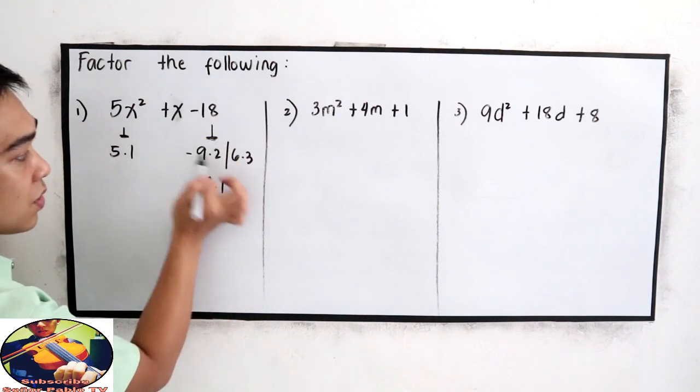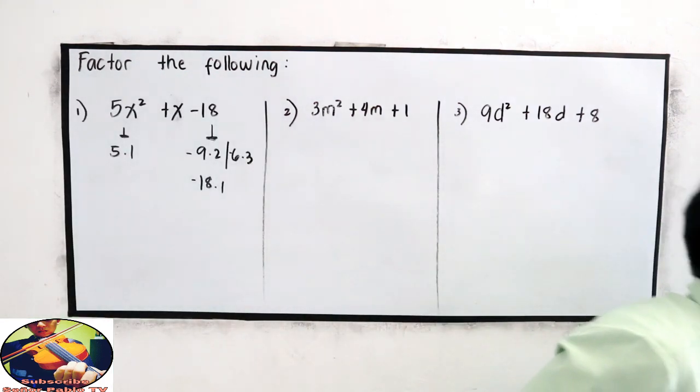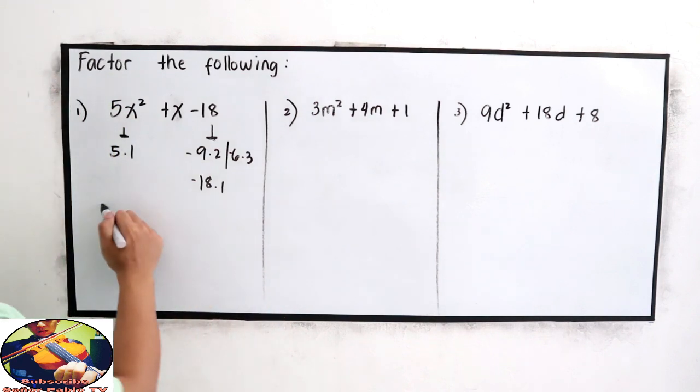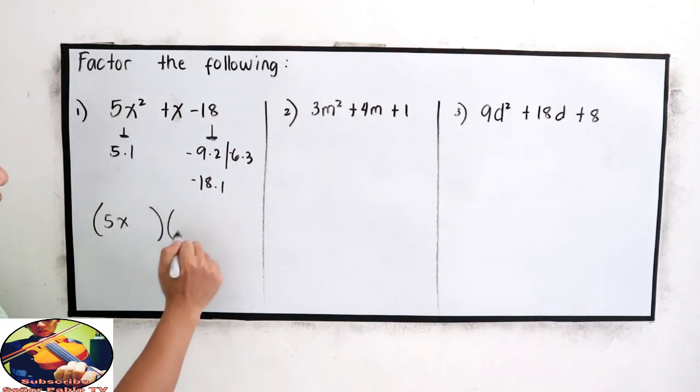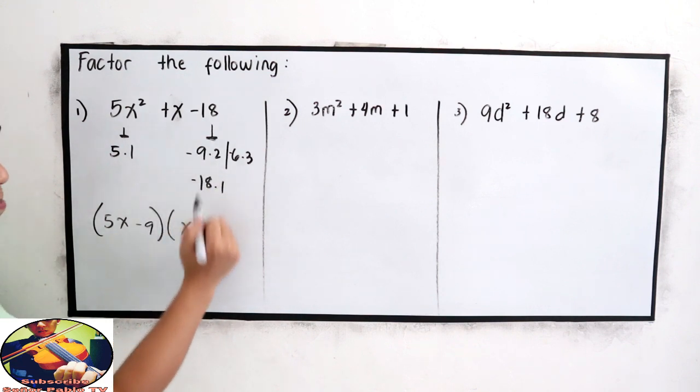This is negative, so negative, negative, negative. Now, let's try 5x, then x. First, let's try negative 9 and positive 2.